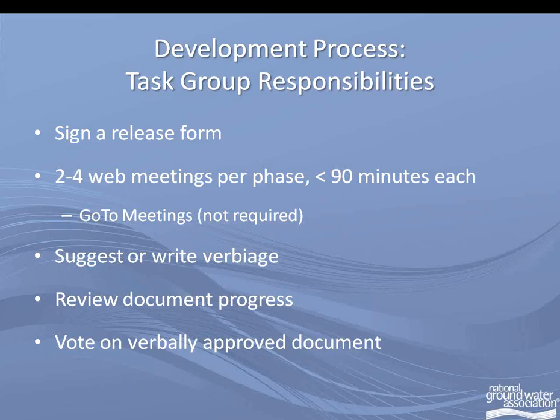To break it down for the task group members, here is what you're responsible for. First, we need a release form from the people working on the standard — if you haven't done that, I will be sending those out shortly. I anticipate that we will have two to four web meetings in each phase — two to four to draft and two to four to take a look at the public comments. Those calls are not going to be longer than 90 minutes each. I hold them using GoToMeeting. You can dial in with your cell phone if you're on the road. During those web meetings, task group members will suggest or actually write the text line for line that will go in the standard. It's important that everybody in the task group takes a look at the document as it goes along — I'll keep sending out new versions so you can make sure it's aligned with industry practices.